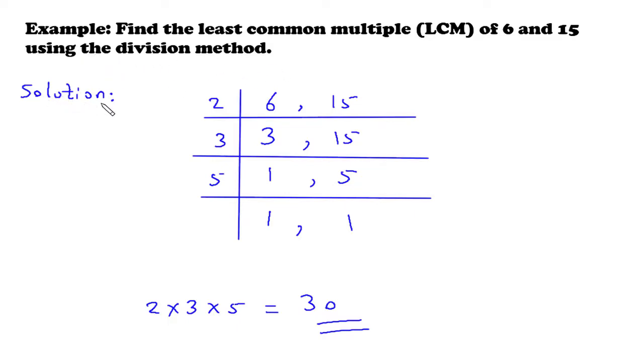Step 1: 2 is the smallest prime number and it is a factor of 6. Write 2 on the left of the two numbers. For each number in the right column, continue finding out prime numbers which are their factors.